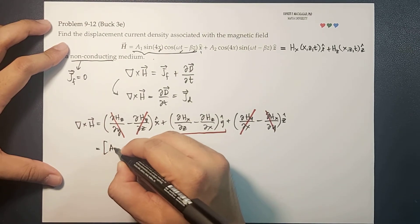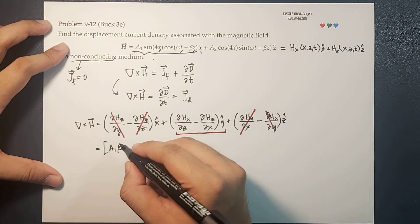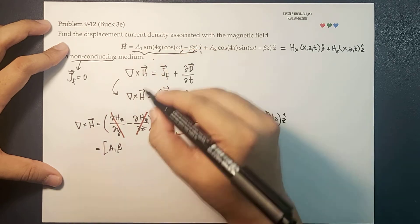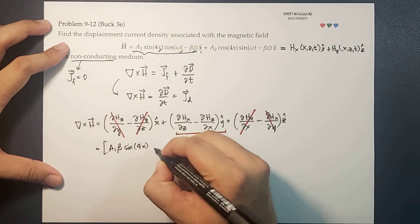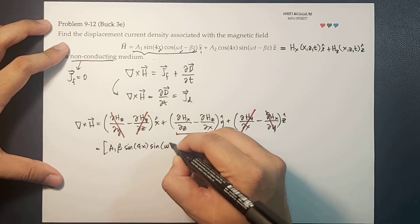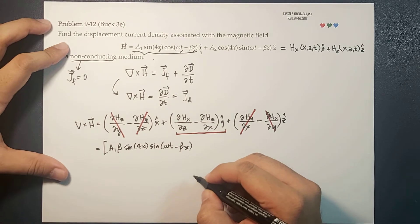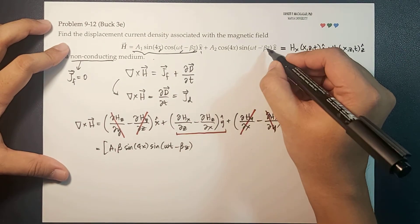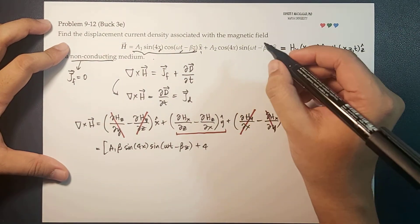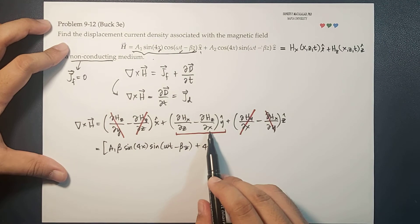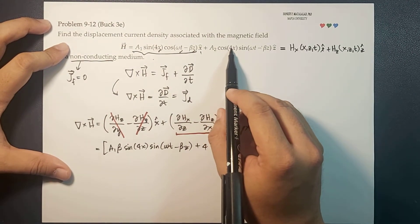a_1 times beta, negative. Then negative because this is cosine, so this becomes sine of 4x times sine of omega t minus beta z. Minus negative beta, so that's plus. With respect to z, which means negative of negative 4a_2